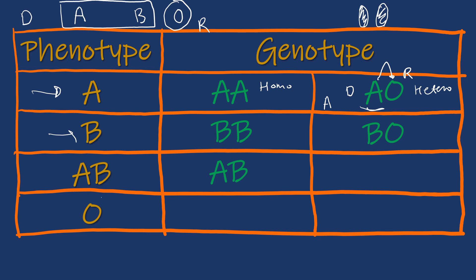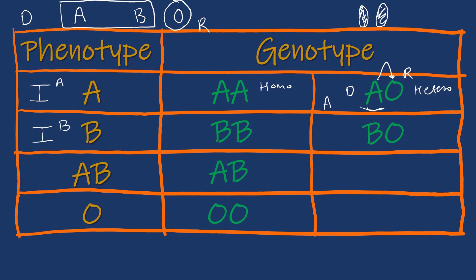Blood type O has only one genotype: OO. Genotypes can also be written using a different notation where gene A is represented as IA, gene B as IB, and gene O as small i. So OO is written as ii, AB as IA IB, BB as IB IB, and BO as IB i, and so on.